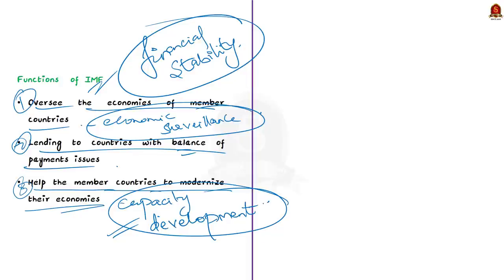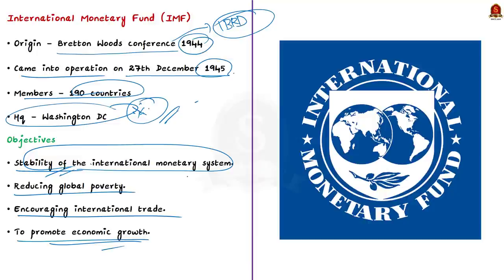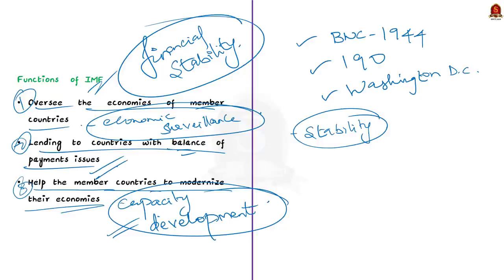The third and final function of the IMF is to help member countries modernize their economies through capacity development — providing assistance, policy advice, and training. It provides technical assistance in areas of fiscal policy, monetary policy, exchange rate policies, banking and financial system supervision, regulation, and statistics. Now, as the balance of payment crisis has turned into a sovereign debt crisis, Sri Lanka has no other choice but to get help from the IMF.